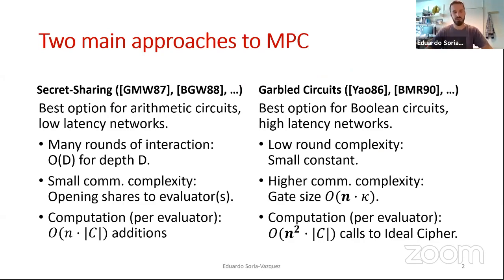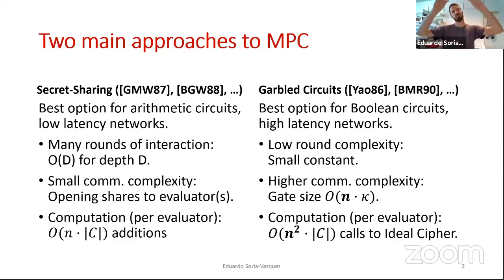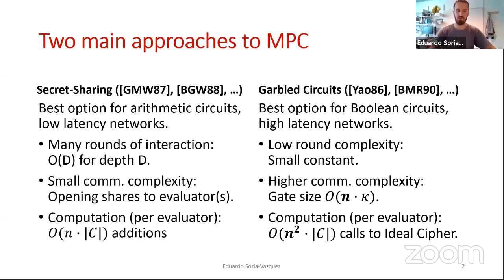On the other hand, secret sharing protocols also have a small communication complexity and are cheap in general for computation. If you have a king approach where parties send shares to one party who computes the result and sends shares back, you only have a linear overhead in the number of parties for the size of your circuit.